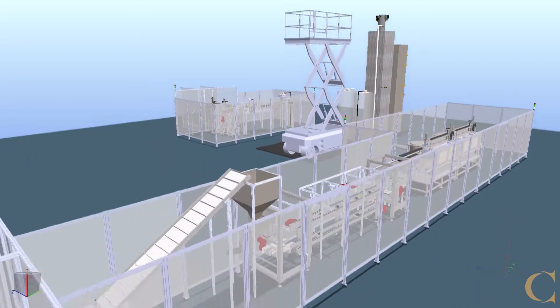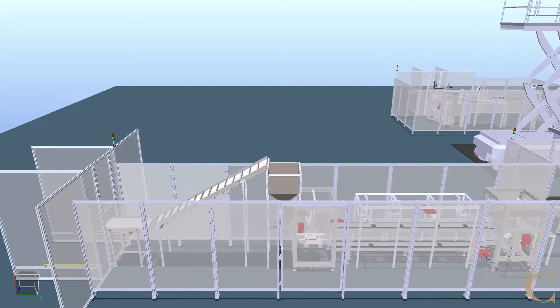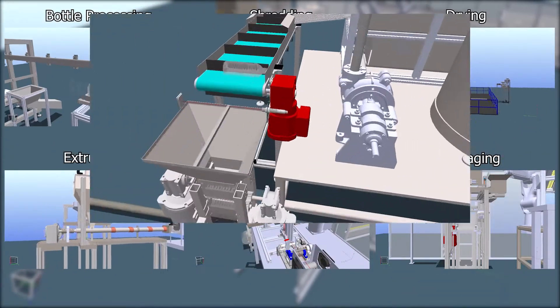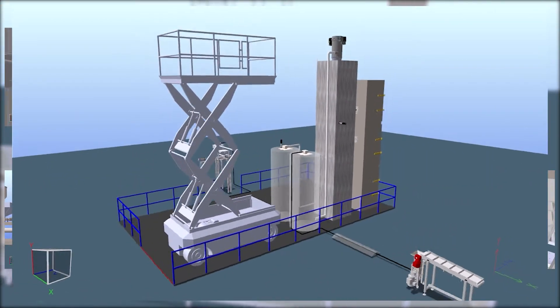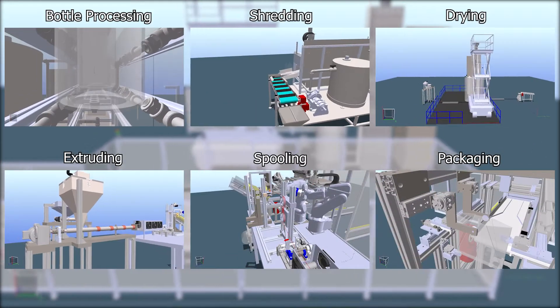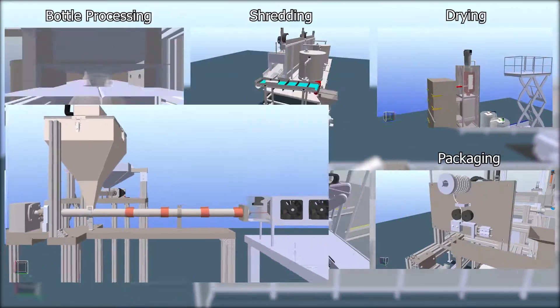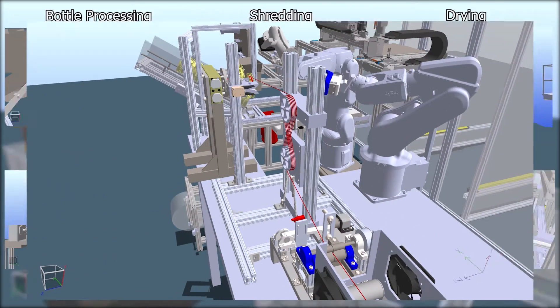Our cell consists of six main stations: bottle processing, shredding, drying, extruding, spooling, and packaging.